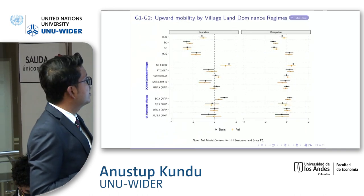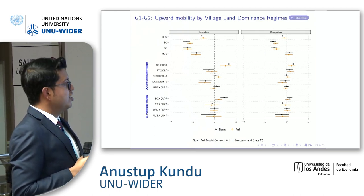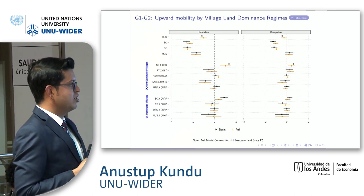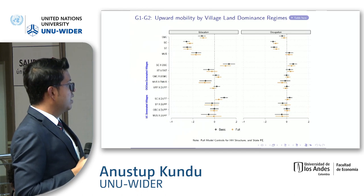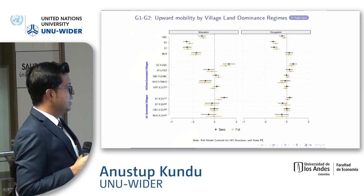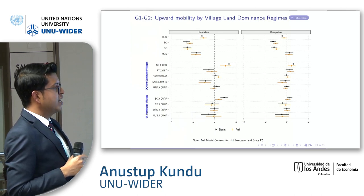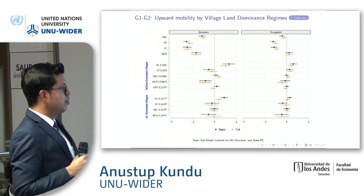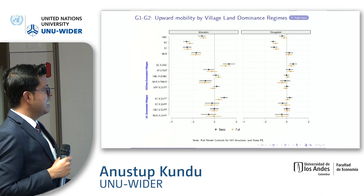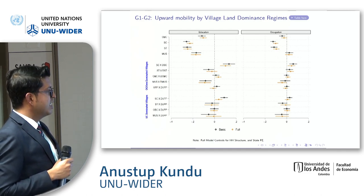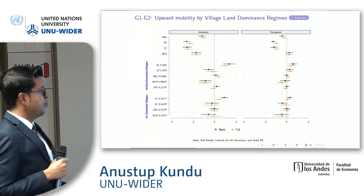What do we find? In comparison to upper caste, all groups are doing much worse. When we look at own-dominated villages: for Scheduled Caste, living in their own dominated village has a significant and positive effect. For OBCs there is one significant positive effect. For Muslims the effect is negative. For upper caste it is insignificant.